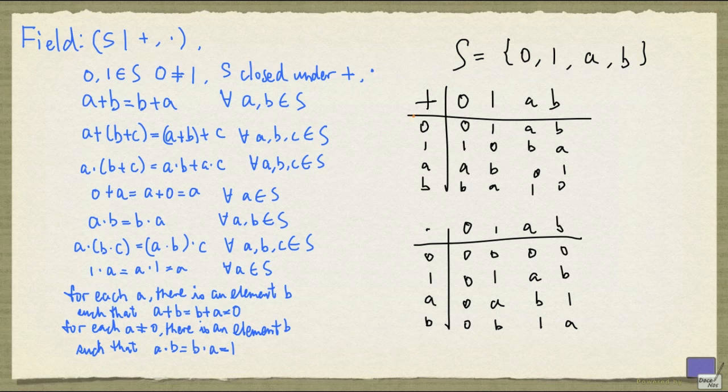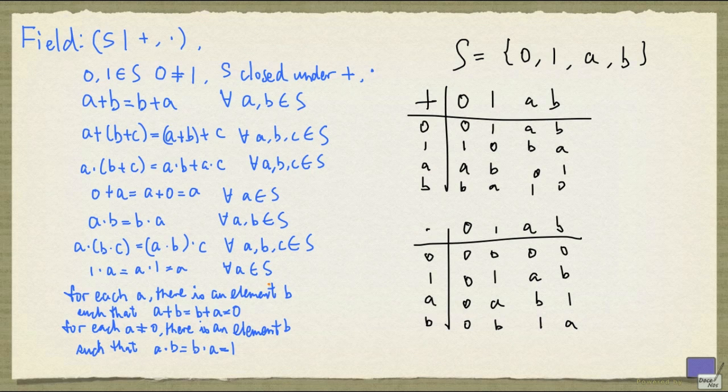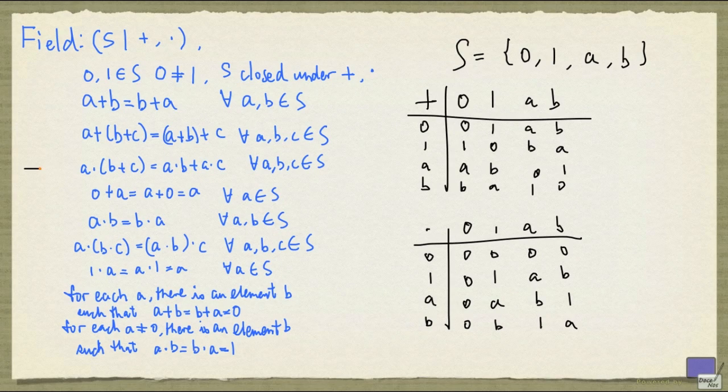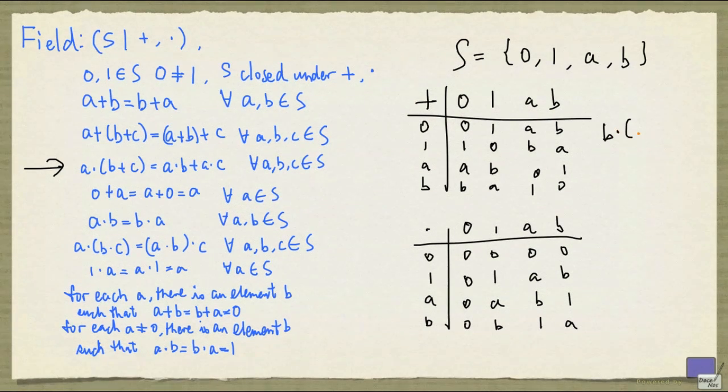In order to verify that this structure is actually a field, we have to go through all these rules. We're not going to do that here, but let's look at a sample of them. Let's take a look at this rule here, and we'll look at the following expression. I'm going to look at b times (a plus b) and see what happens.